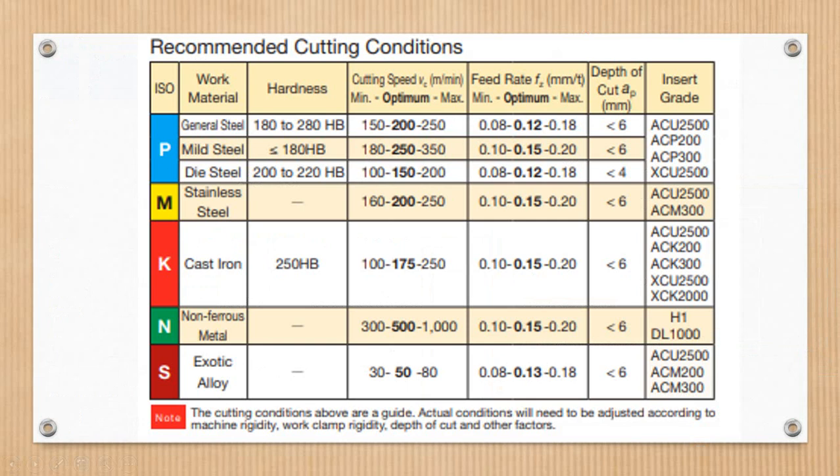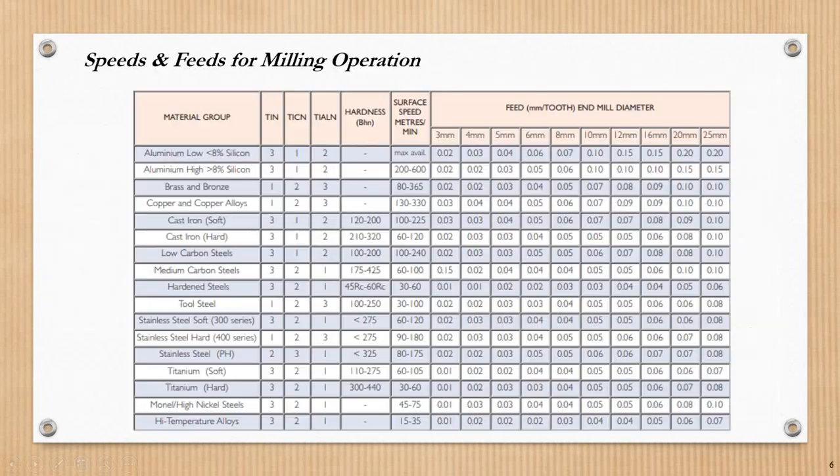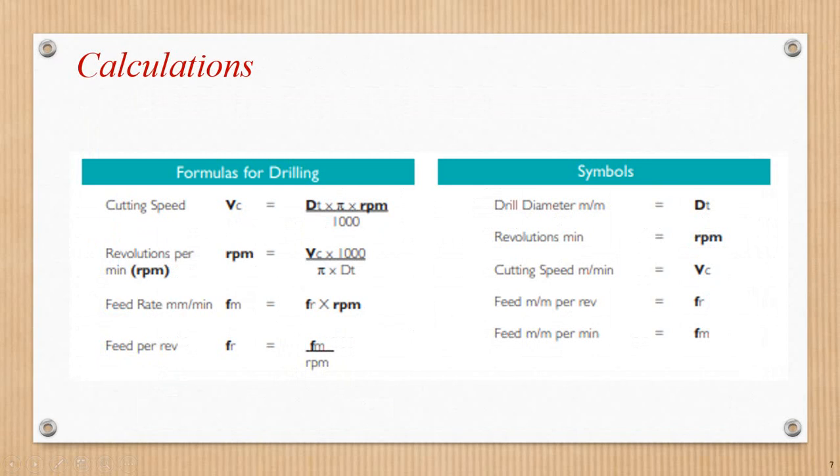These calculations depend on the type of material you're machining. Different materials require different speeds and feeds. This affects the surface finish and machining time. The surface feed per minute is an important consideration.